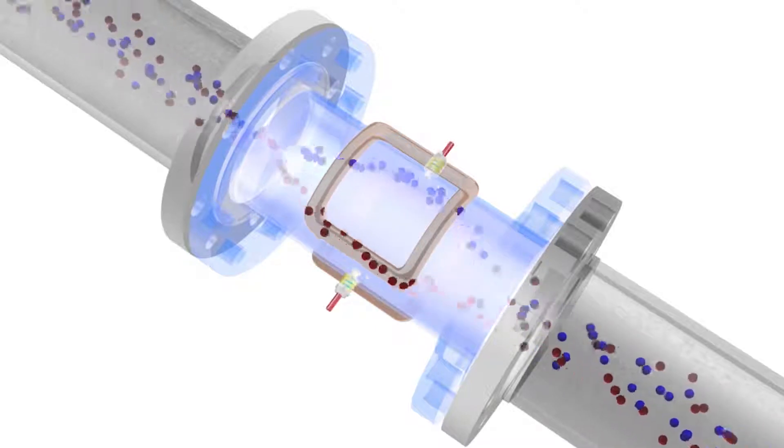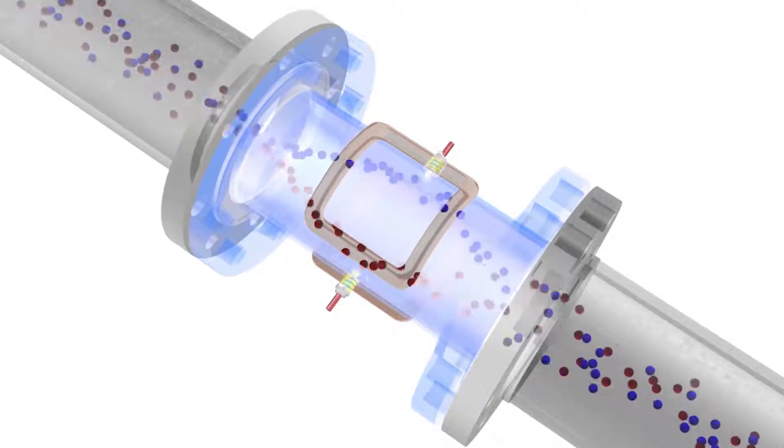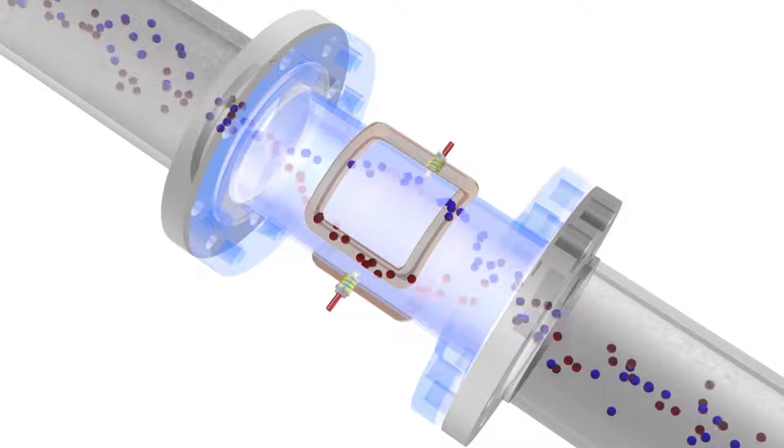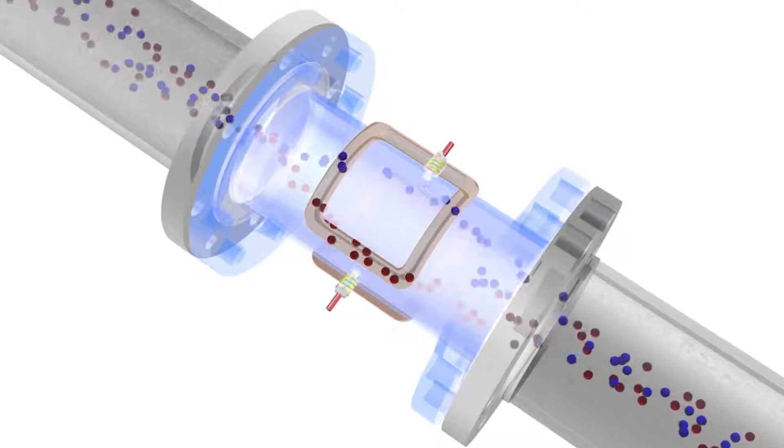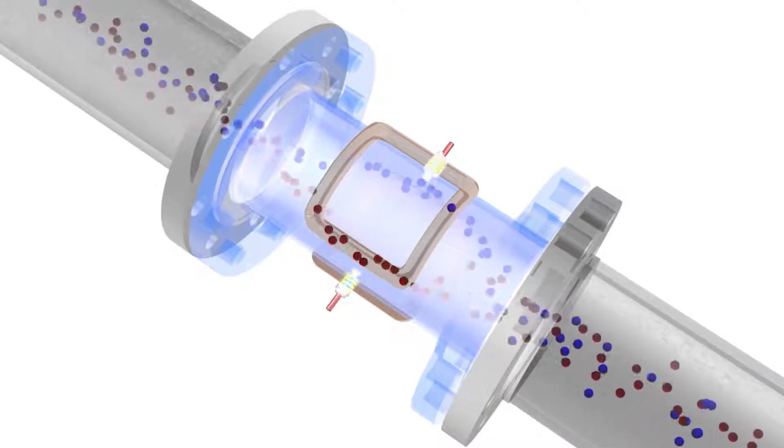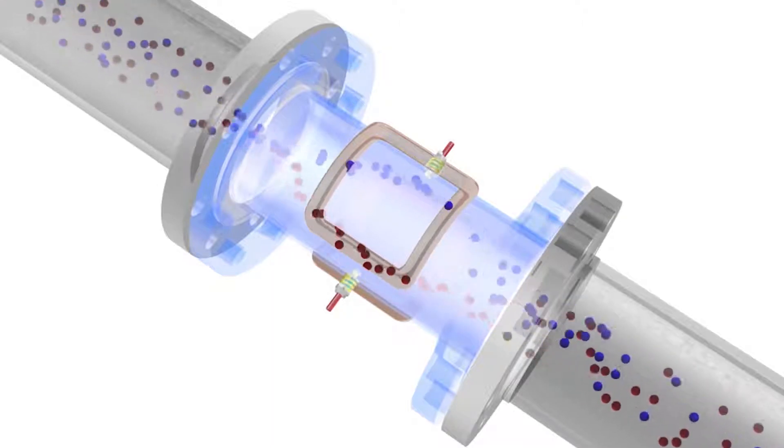This separation causes an induced voltage to be formed between the electrodes in the sensor. The conductivity or charge of the fluid in the pipe must be at a certain level for the transmitter to measure the induced voltage at the electrodes.